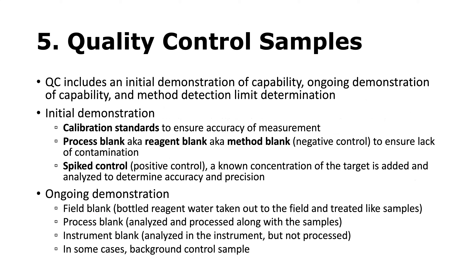Concept five — quality control samples — includes an initial demonstration of capability and ongoing demonstration of capability, as well as determining the method detection limit. The initial demonstration is usually performed using calibration standards to ensure accuracy of measurement. We also analyze process blanks — also called reagent blanks or method blanks — as a negative control to demonstrate the lack of contamination during sample analysis. And we analyze a positive control like a spiked control, adding a known concentration of the target constituent to determine accuracy and precision.